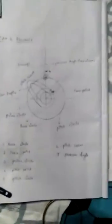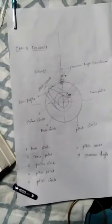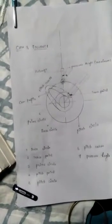And then the third one is prime circle. The smallest circle drawn from tangent to the pitch curve is known as prime circle.